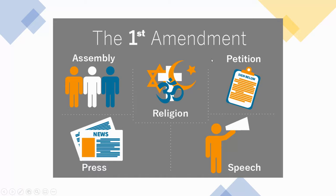If you do not like something the government is doing, you can petition. You can go to the government and say, 'I don't like this certain aspect of what you're doing,' and you can try to get laws changed. There is also the freedom of the press. Here in America, people like to say we have a free press — there are hundreds of newspapers, and it is up to you to choose the news source that you like, and you have the freedom to do that.